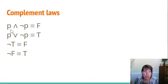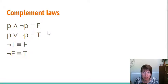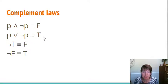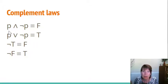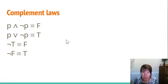The complement laws say that if you AND P and NOT P together, you get false in all cases. And if you OR P and NOT P, you get true. Also in this group: NOT true is false, and NOT false is true. So when you AND P and NOT P you always get false, and when you OR P and NOT P you always get true.